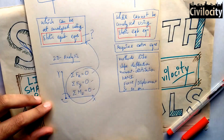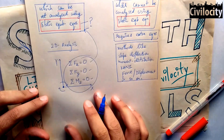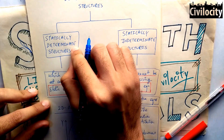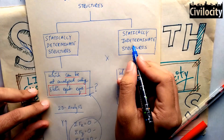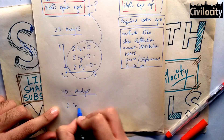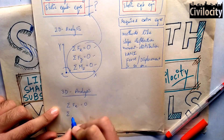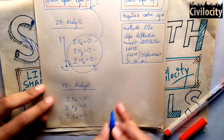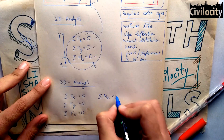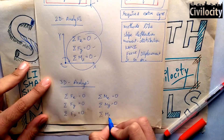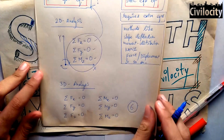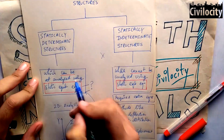Structures that can be solved using these three equilibrium equations are statically determinate. Structures that cannot be solved with them are statically indeterminate. For extra knowledge: in 3D equilibrium, forces in x, y, and z directions must all equal zero, and moments about all three axes must also equal zero — giving six equilibrium equations total in 3D analysis.